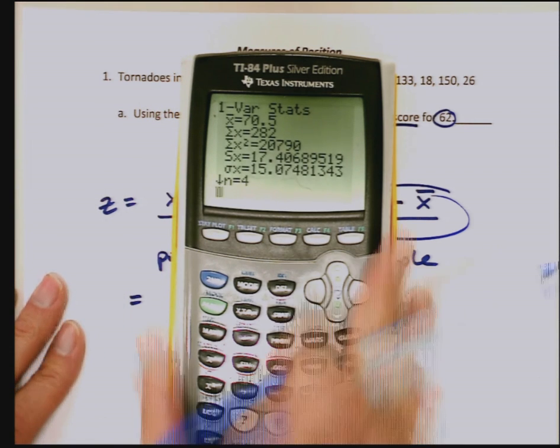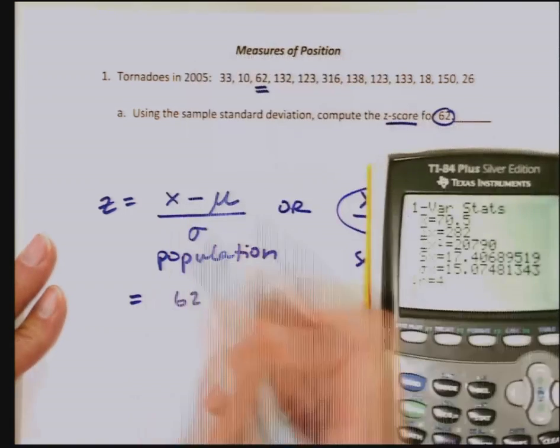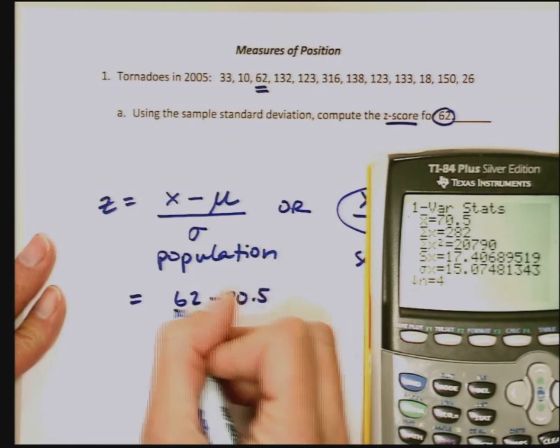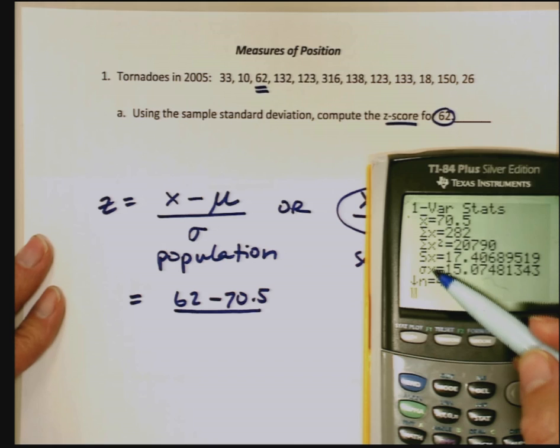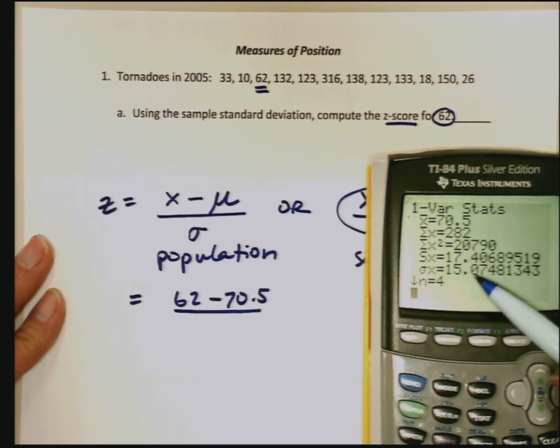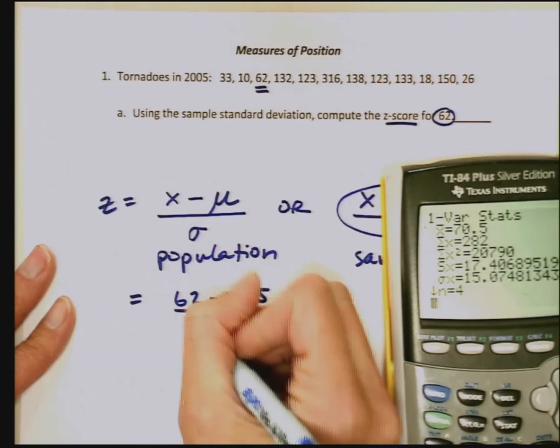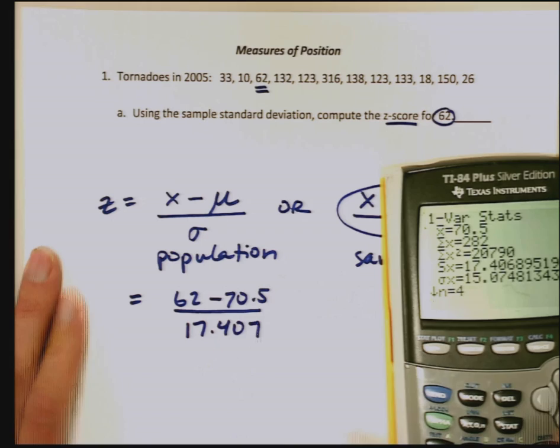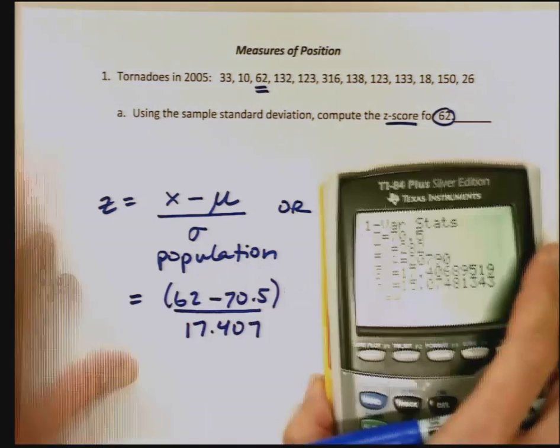One variable stats. So I've got that standard deviation of 70.5. Let me write this into my formula: 70.5. And we're using this as a sample, so I want the standard deviation s, which is 17.407. I'm going to hang on to some extra decimal places because I'm not done calculating.